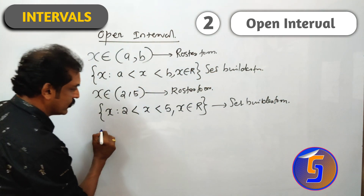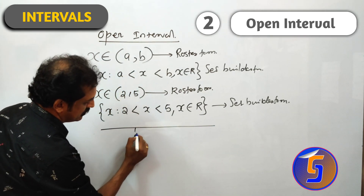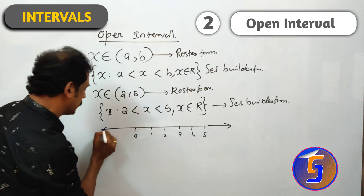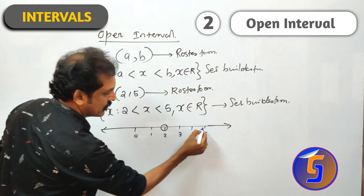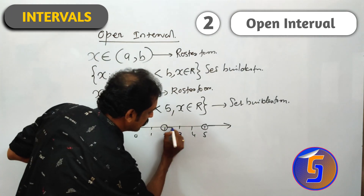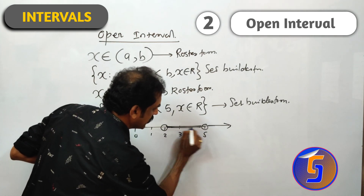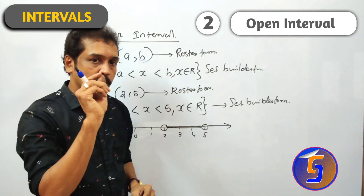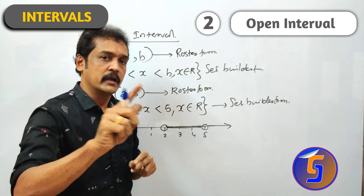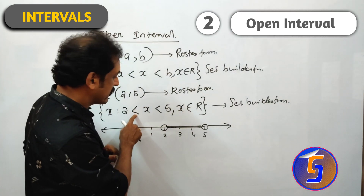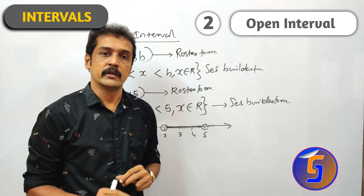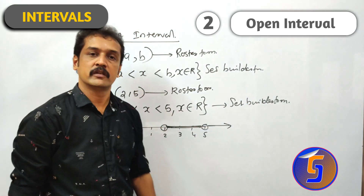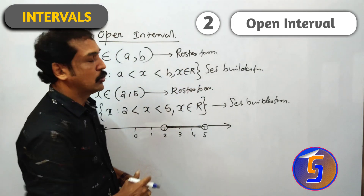For the geometrical form, draw a number line: 0, 1, 2, 3, 4, 5. Mark 2 and 5 with round (hollow) circles since they are excluded. That is the geometrical form of the open interval.